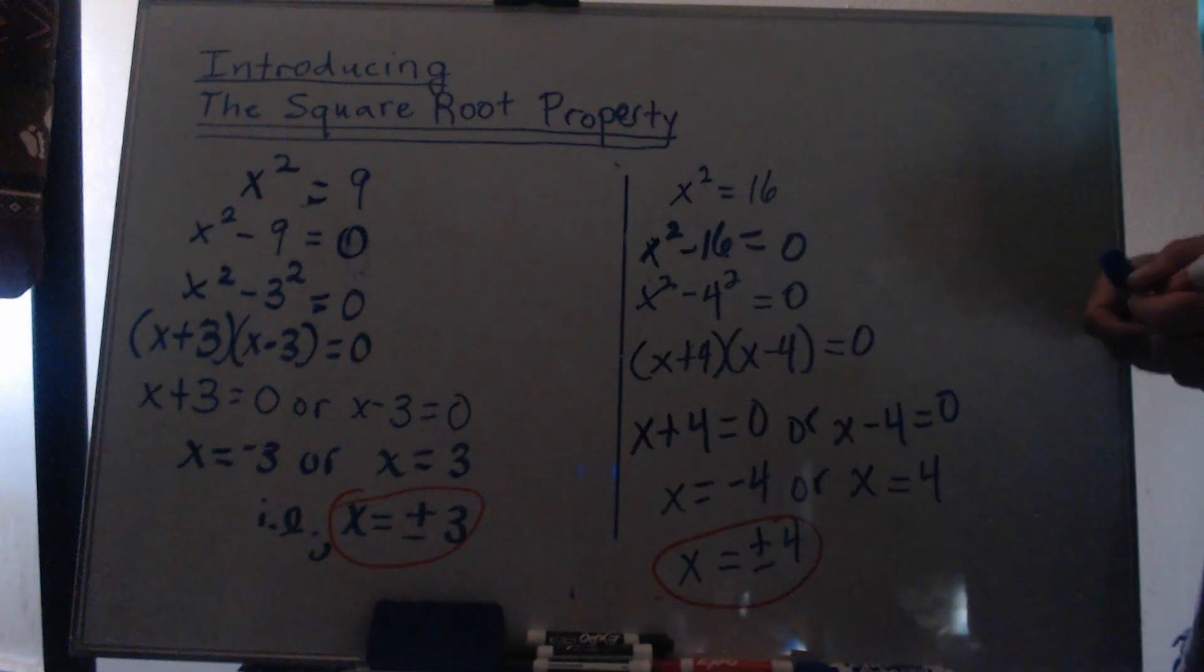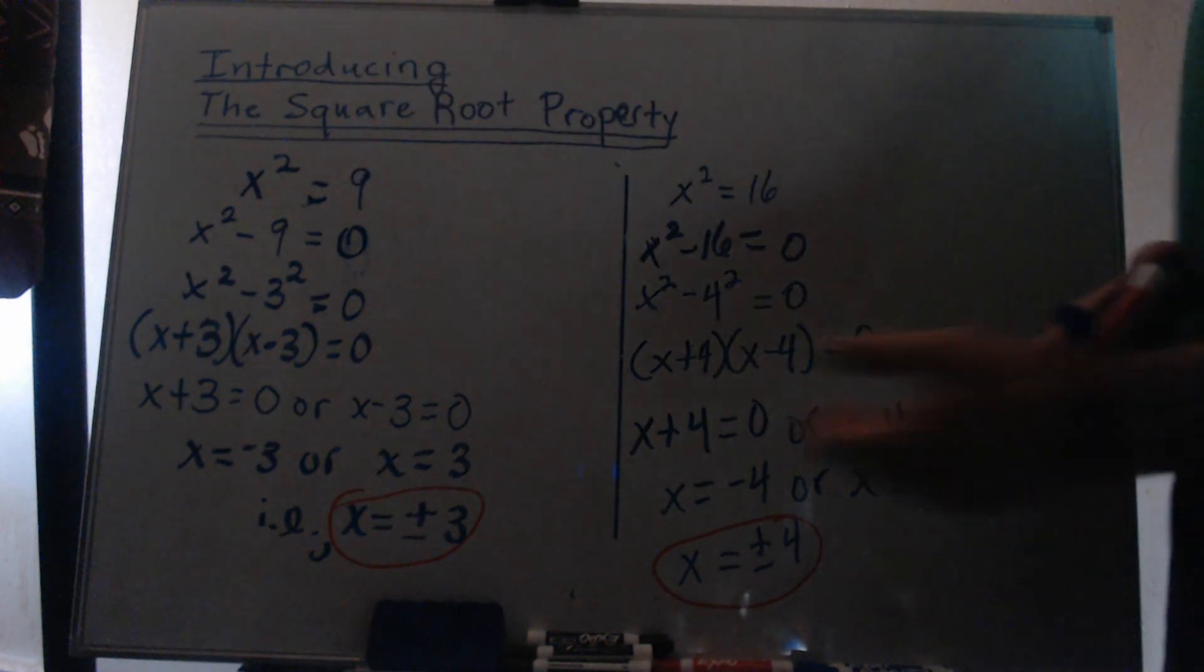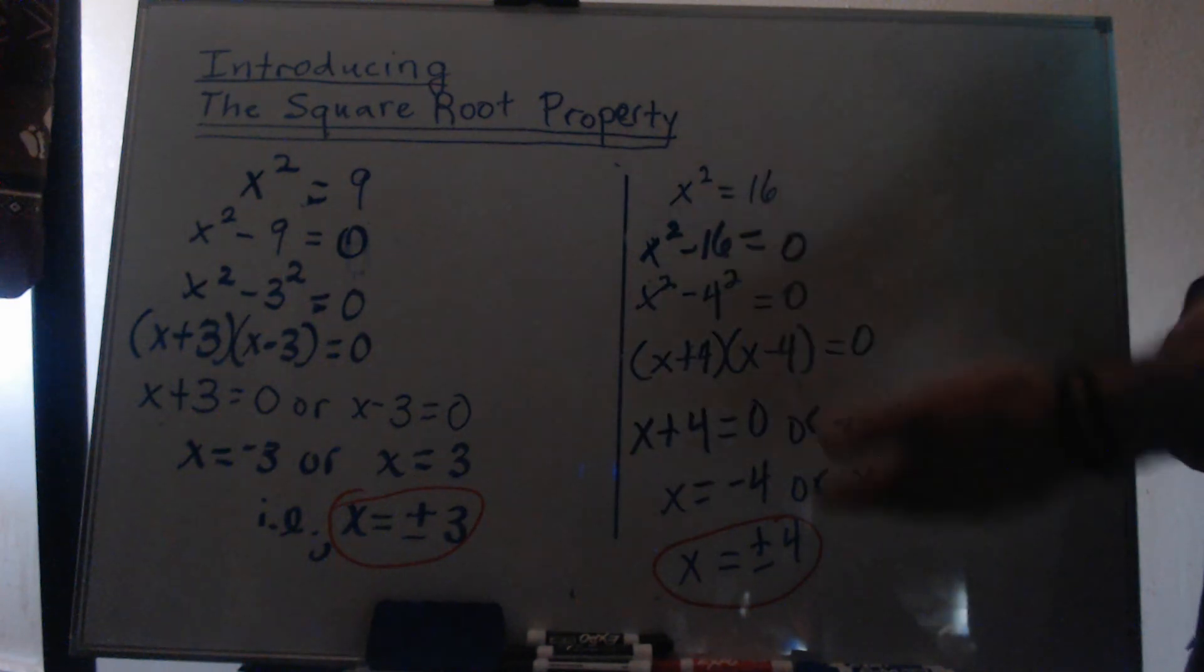Automatically, people are going to ask, well, why didn't you just take the square root? Square root of 9 is 3, and the square root of 16 is 4. We're going to address that next.